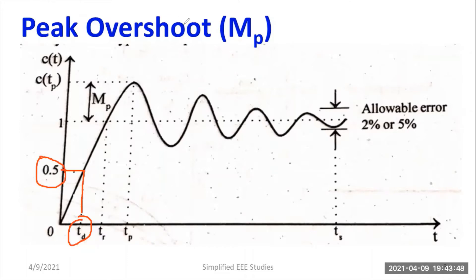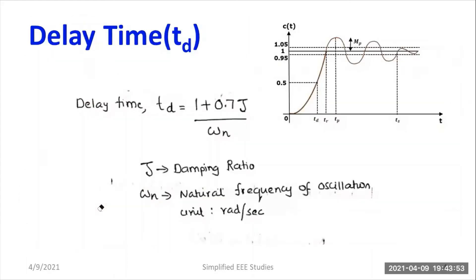In the last session, I explained the expression as well. The expression for delay time is given by td equals 1 plus 0.7 zeta divided by omega n, where zeta is the damping ratio and omega n is the natural frequency of oscillation, expressed in radians per second.